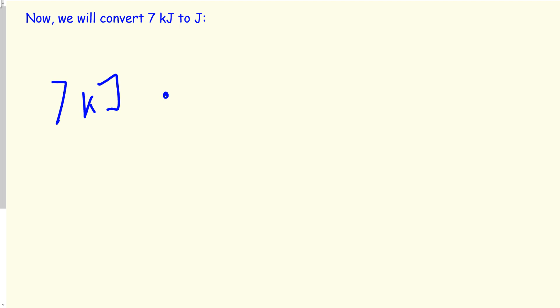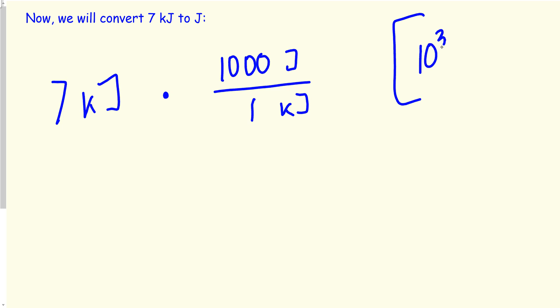Now let's move to converting from kilojoules to joules — going from a bigger number to a smaller number. Like exchanging $700 bills for $20 bills: you get more bills but the value is the same. So for 7 kilojoules, joules should be at the top and kilojoules at the bottom. The conversion factor is still the same: 1,000 joules equals 1 kilojoule, since kilo is bigger. So 10 to the power 3 joules equals 1 kilojoule.